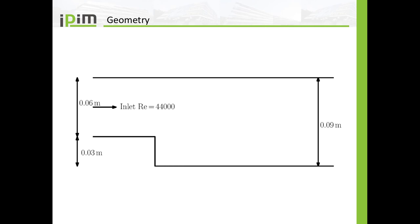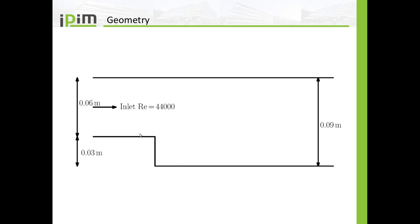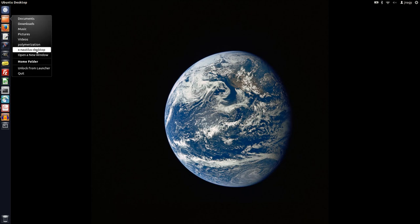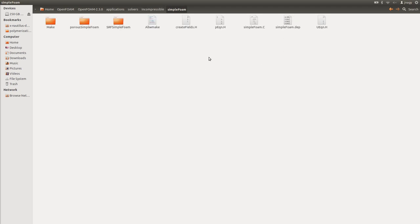Here you see the geometry again. On the left-hand side we have the inlet, on the right-hand side we have the outlet. On the inlet we will set the velocity so we have a Reynolds number of approximately 44,000, and we have to calculate also the turbulent kinetic energy, the dissipation, and omega on the inlet. Now I want to jump in, but first I want to show you the source code of simpleFoam — solvers, incompressible, and simpleFoam — because I want to show you how turbulence modeling enters the simulation.